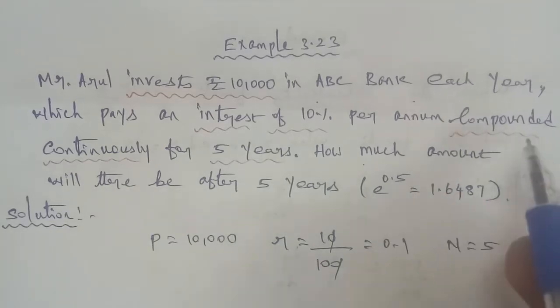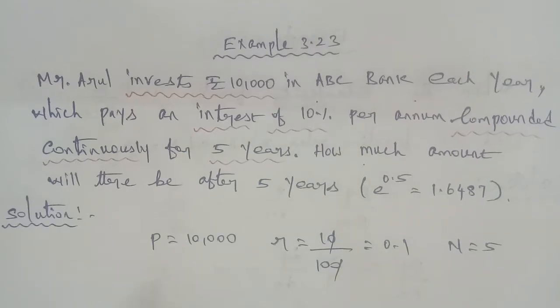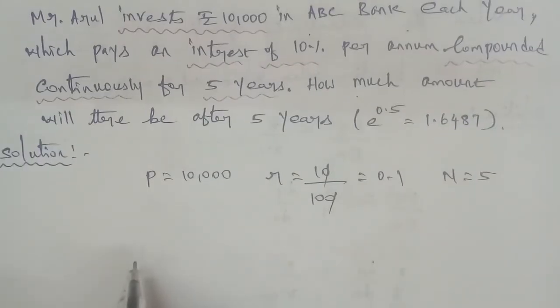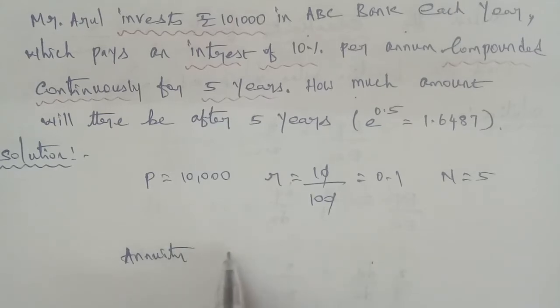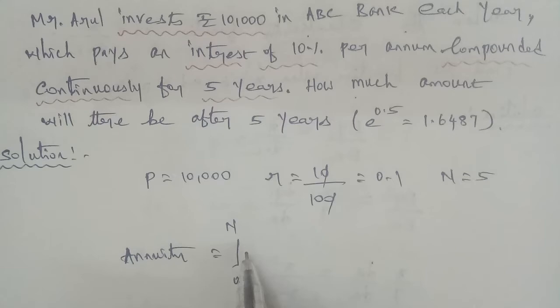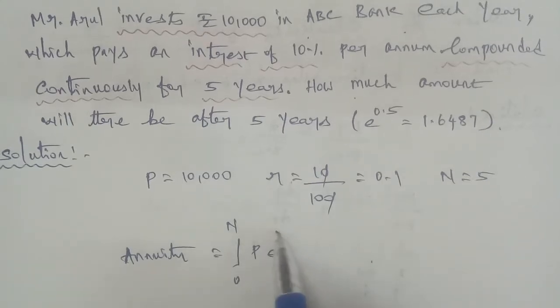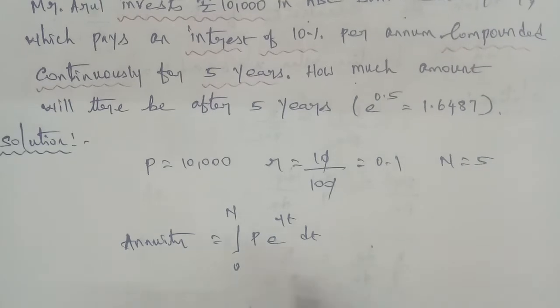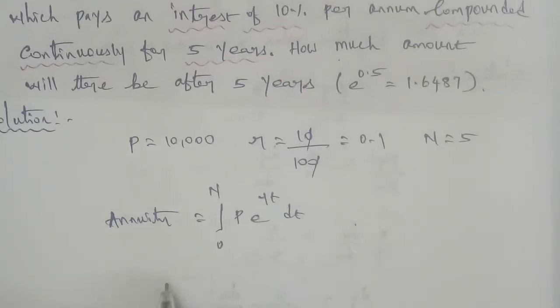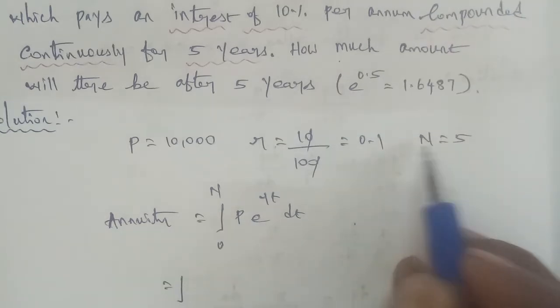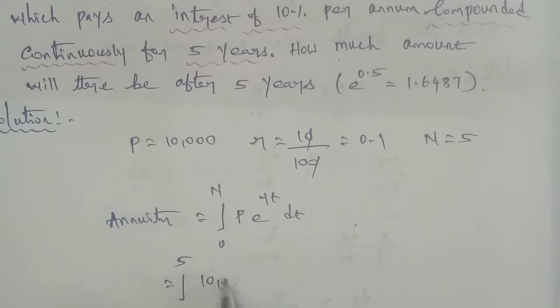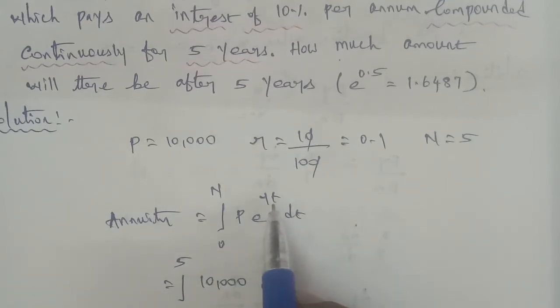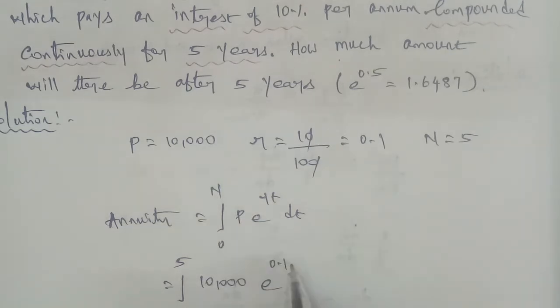So compound continuously, for this we use the annuity formula. The amount of annuity after n payments, therefore the annuity A equals the integral from 0 to n of P e^(rt) dt. So this is the value of 5, and P equals 10,000, and e^(rt) equals e^(0.1t) dt.